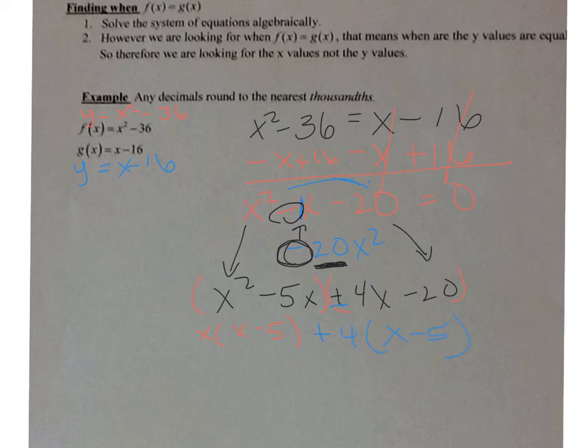So my two factors are x plus 4. Remember, it's your coefficients. And x minus 5. And that equals 0, remember.